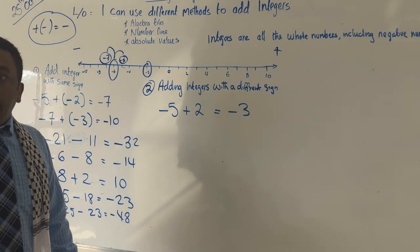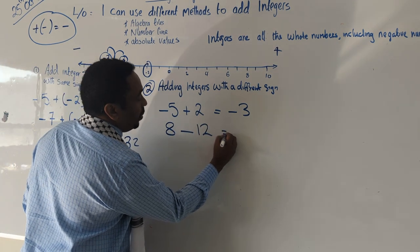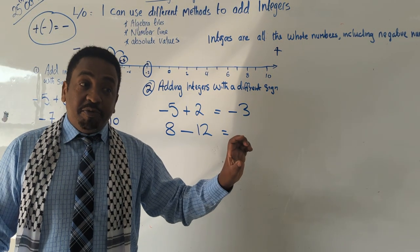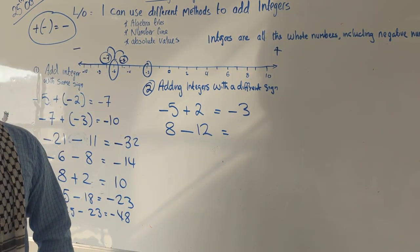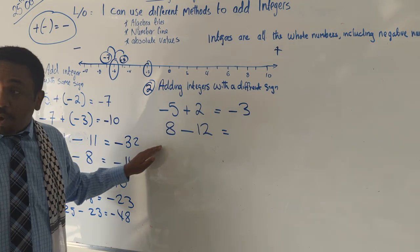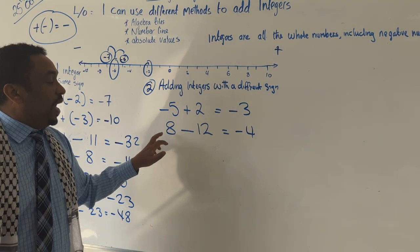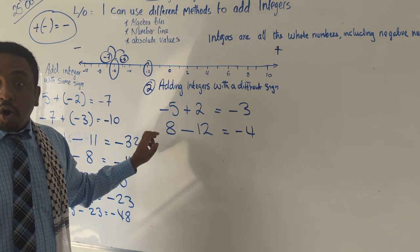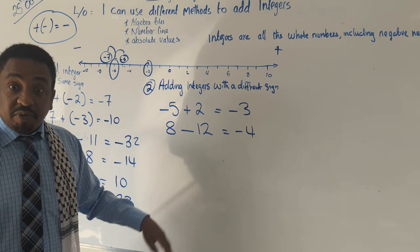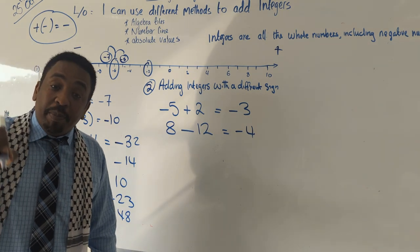Let's use another example: minus 12 plus 8. You still take them away — what is 12 take away 8? 4. But which number is carrying the negative? The 12. And 12 is bigger. So if the big number is carrying the negative, the answer will be negative. So the answer is minus 4.